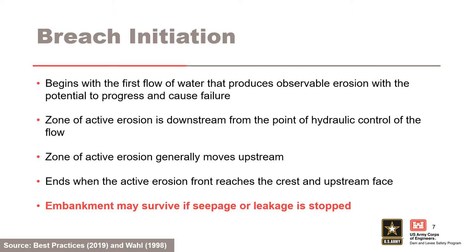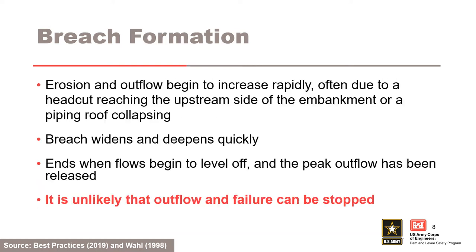The embankment may survive if the overtopping or seepage and leakage flow is stopped. The breach formation phase begins when erosion and outflow begin to increase rapidly, often due to a head cut reaching the upstream side of the embankment or a piping roof collapsing. During this rapid downcutting phase, the breach widens and deepens quickly. It ends when flow begins to level off and the peak flow has been released. It is unlikely that outflow and failure can be stopped.